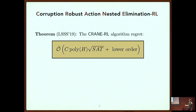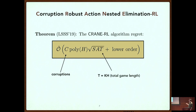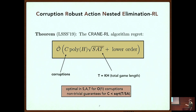Our result: we produce an algorithm called CRANE — Corruption Robust Action Nested Elimination. The algorithm gives a non-trivial regret guarantee. C refers to the number of corruptions encountered, T is the total game length K times H, H is the horizon, S the number of states, and A the number of actions. With order-one corruptions, we're optimal in the state, action, and time parameters. We get non-trivial regret guarantees as long as corruptions are less than square root T, after which things break down. We can also get logarithmic regret, extending our earlier work with Kevin Jamieson at University of Washington showing optimistic algorithms naturally enjoy logarithmic regret for tabular settings.